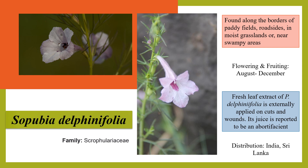Sopubia delphinifolia is found along the borders of paddy fields and roadsides in moist grasslands or near swampy areas. Flowering and fruiting occurs from August to December. Fresh leaf extract is externally applied to cuts and wounds, and its juice is reported to be an abortifacient.